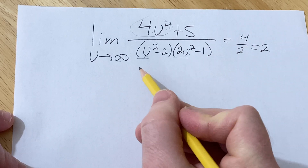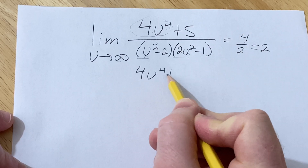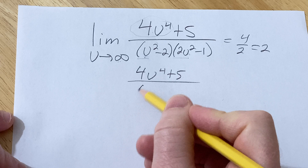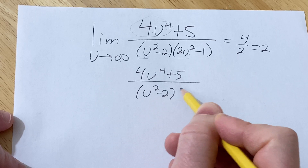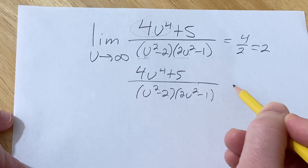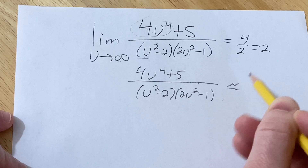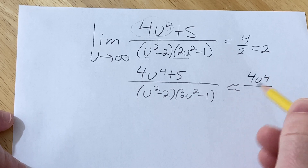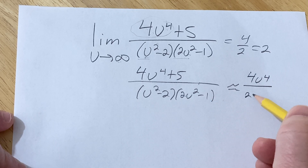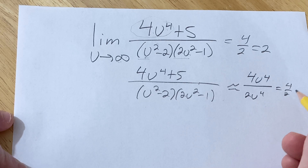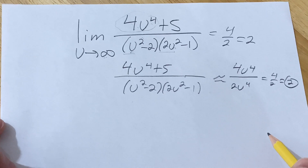Intuitively, you could write it like this: the limit of 4u to the 4th plus 5 over (u squared minus 2)(2u squared minus 1) is approximately equal to 4u to the 4th over 2u to the 4th, which is 4 over 2, which equals 2. And so that's the answer.